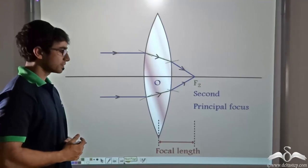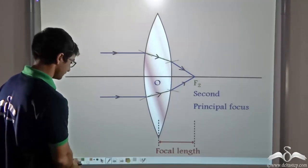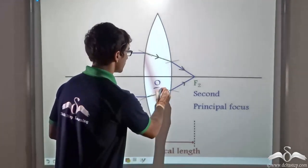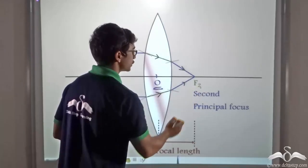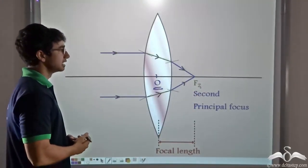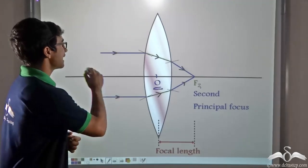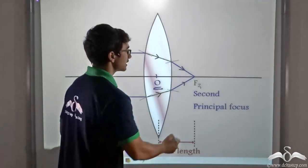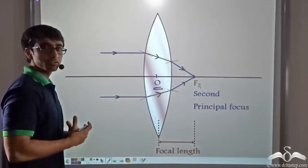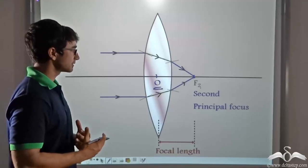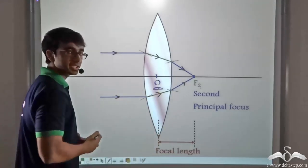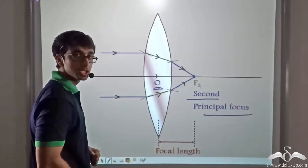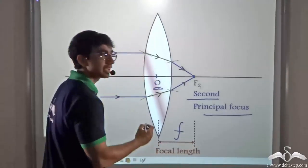Now we define another term: focal length. In the case of a convex lens, the distance between the optical centre and F2 is marked as the focal length. Parallel rays incident on the convex lens are converged at F2, so conventionally the focal length is defined as the distance between the optical centre and the second principal focus, denoted by the letter f.